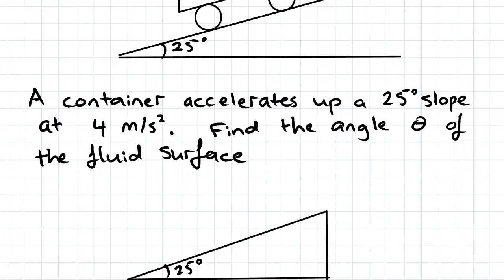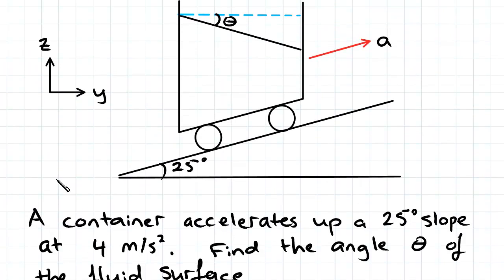we've been told that it accelerates up a 25-degree slope at 4 meters per second squared. And we've been asked to find the angle theta of the fluid surface. So that's the angle theta down from the horizontal position.